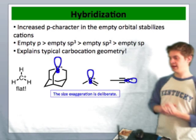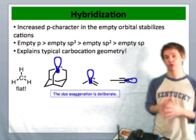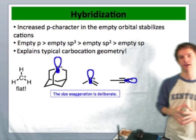As you can see from the top of this slide, empty orbitals prefer to have as much p character as possible and are most stable when they have as much p character as possible.